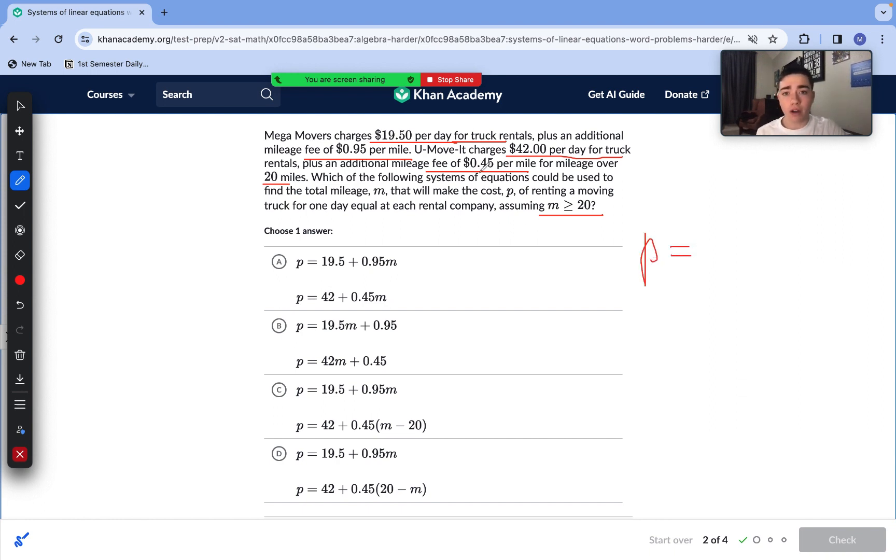So let's start with Mega Movers. P equals, we need to figure out which of these values is a slope and which is a y-intercept. We're finding the total mileage, so our variable is actually going to be per mile because we're measuring mileage and not the amount of days. For moving a truck one day, this just cancels out this multiplication. We're just going to be having a starting value of $19.5, meaning our variable is with our 0.95. So our first equation looks like P equals 0.95M plus 19.5, which matches answer choice A and C and D. We can cross out answer choice B.